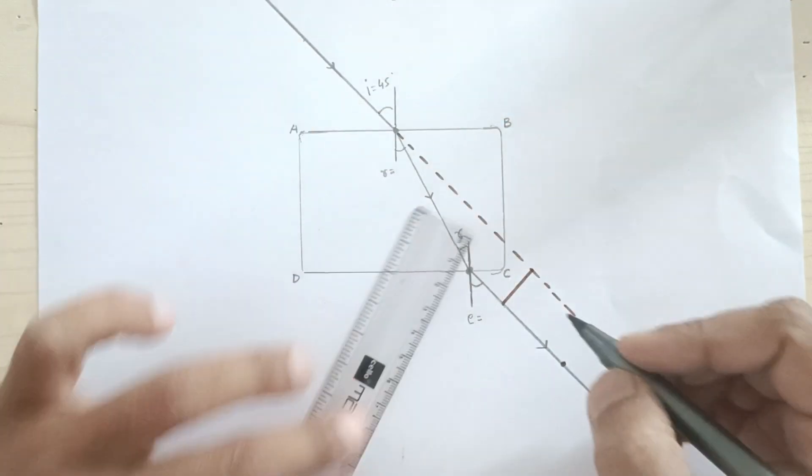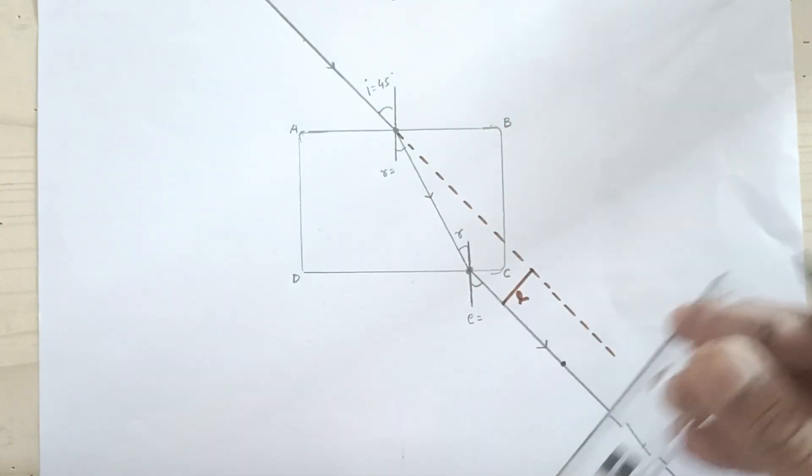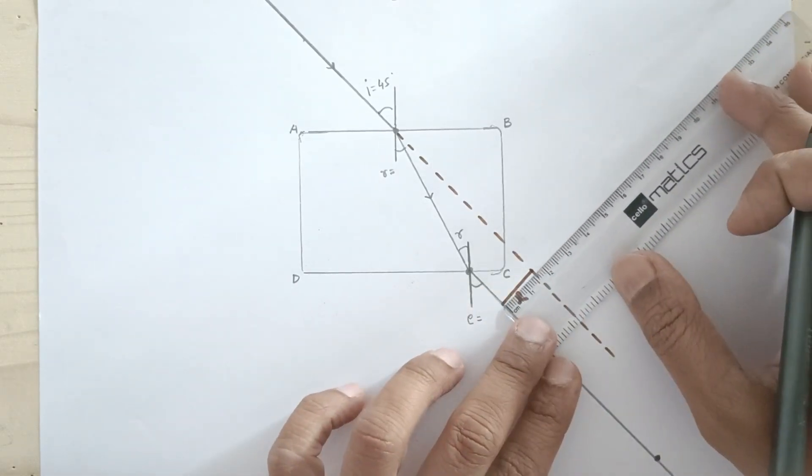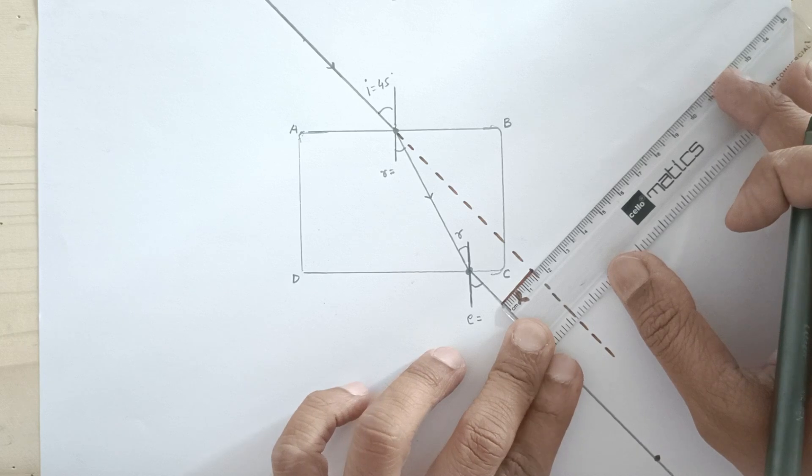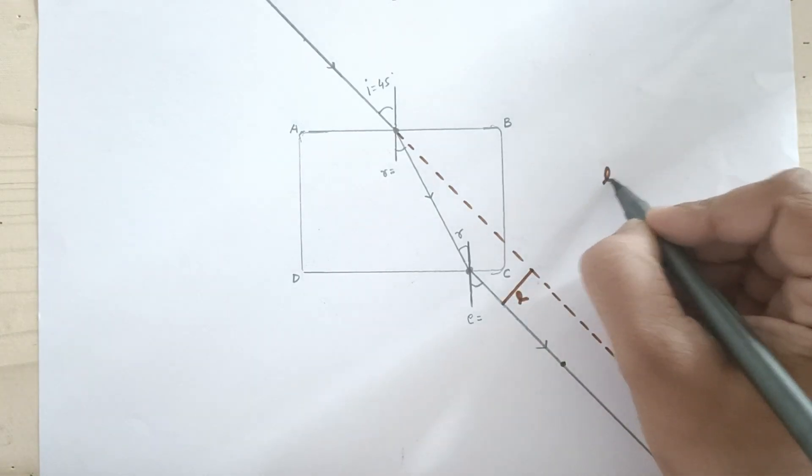The perpendicular distance between the emergent ray and the extended incident ray is lateral displacement. Let's measure the lateral displacement using the scale. It turns out to be 1.6 centimeters.